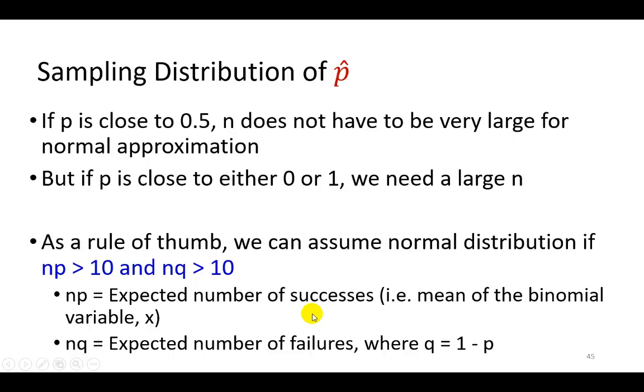You might say, well, how large does the sample have to be for us to use normal approximation? If the population proportion is close to 0.5, then the sample size doesn't have to be very large for us to utilize a normal approximation. As in the case of a fair coin, the probability of observing a head, regardless of how many times you flip that coin, is always going to be 0.5. So we know we don't have to flip that coin so many times to approximate the normal distribution for the sample proportion.